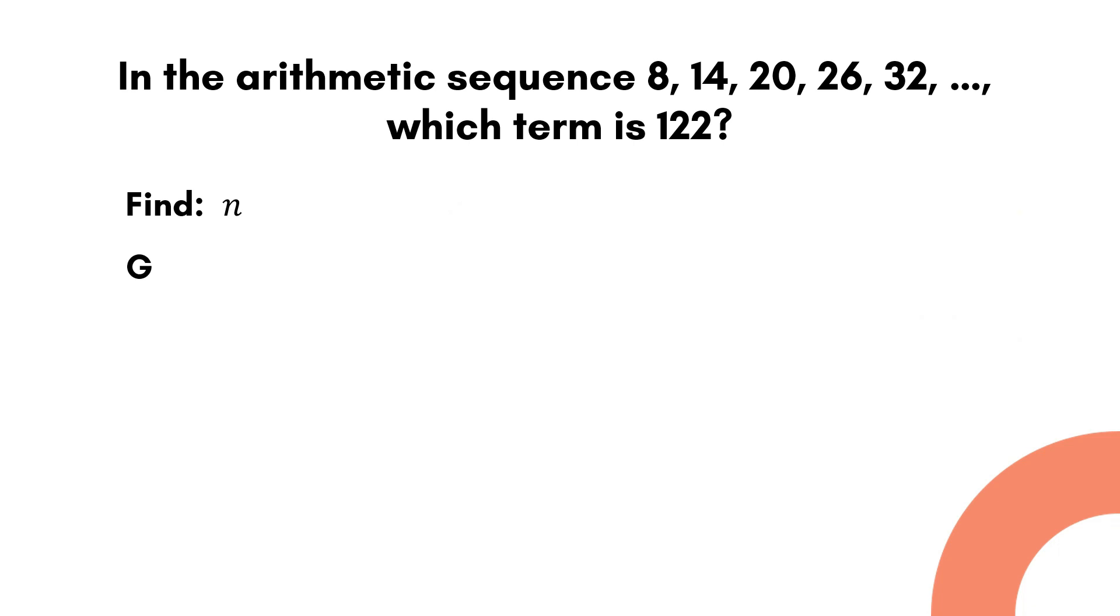Here are the given values. The first term is 8. The common difference is 6. Just subtract any consecutive terms in the sequence. And the last term, or a sub n, is equal to 122.